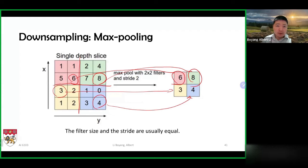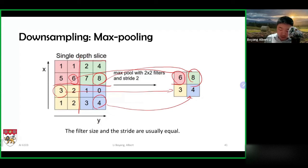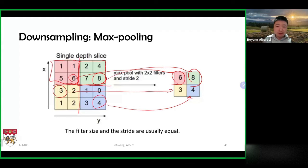You could have variations, but this is known as max pooling with two by two filters and stride equal to two. Two by two filters means I'm taking the two by two area at a time, and stride equal to two means I'm going to move two pixels at a time so that these areas do not overlap. It's possible to have other settings, although the typical setup is for the filter size and the stride to be equal.